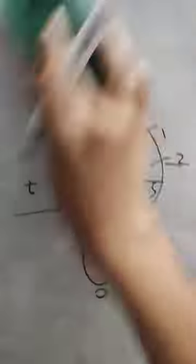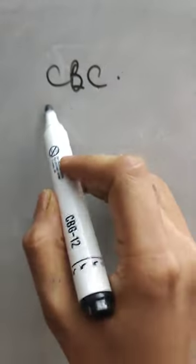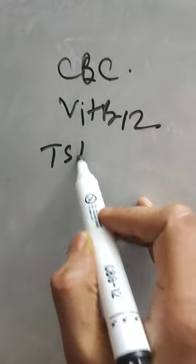So this is the mini cog test. In addition to this, you have to do general physical examination and order basic lab tests: complete blood count, vitamin B12, and thyroid function tests.